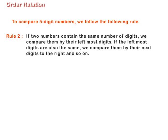Rule 2: If two numbers contain the same number of digits, we compare them by their leftmost digits. If the leftmost digits are also the same, we compare them by their next digits to the right and so on.